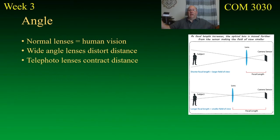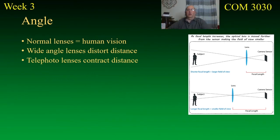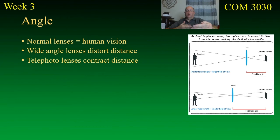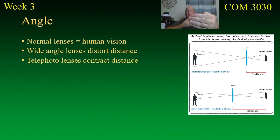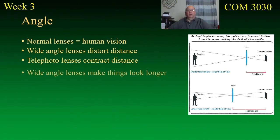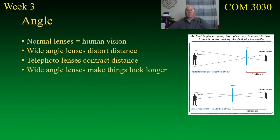If you have two people one standing three feet away from the other, a telephoto lens is going to make them look like they're right up on each other, whereas a wide angle lens could make them look like they're further apart from each other, and a normal lens would more or less show what you would normally see.